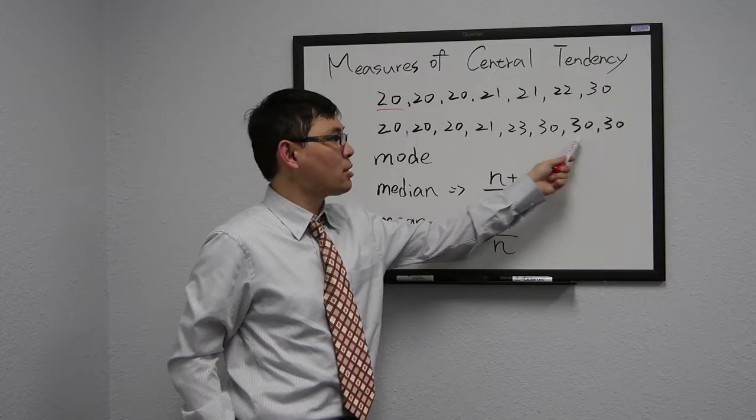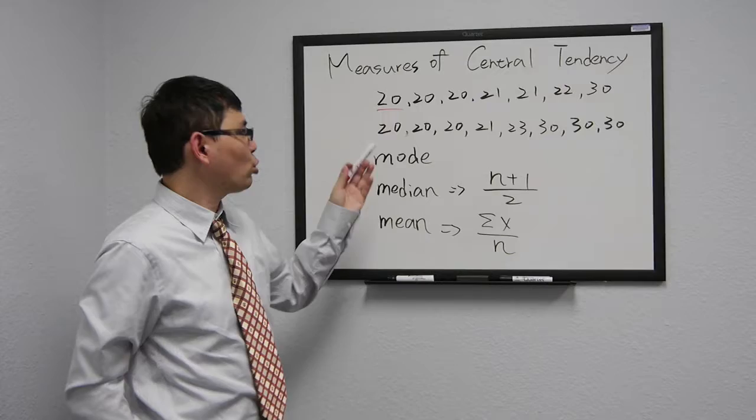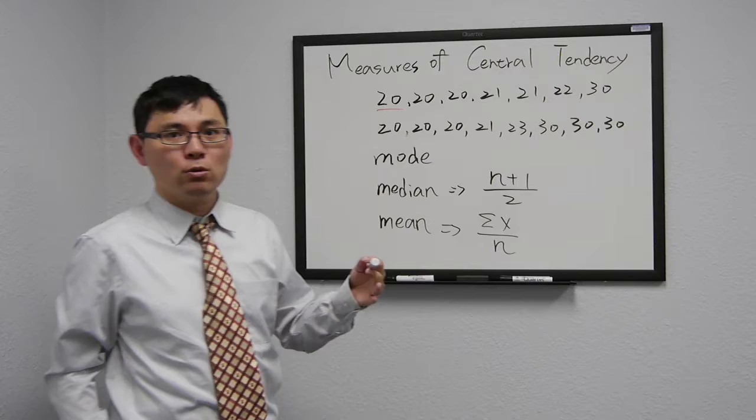23, 30, 30, and 30. We have the equal number of 20 and 30. So in this case, the modes are 20 and 30.